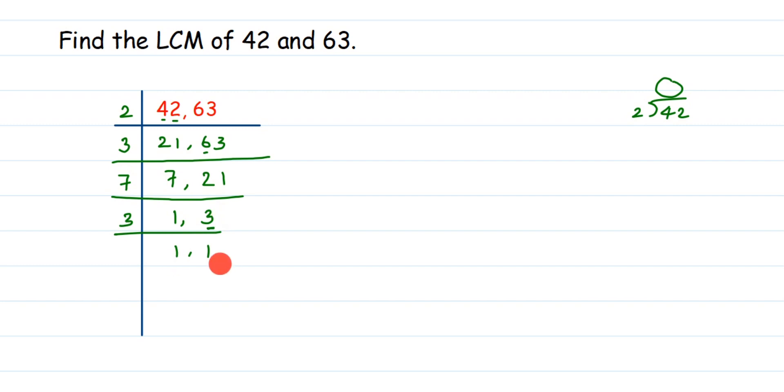Now we got 1, so when you get 1 it means you have to stop the procedure there, and then you can find the LCM. To find the LCM, you have to just multiply the prime factors we got, and that will give you the LCM. So let's conclude the answer here.